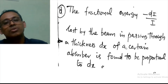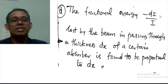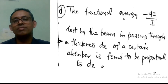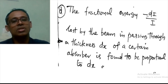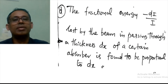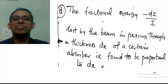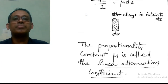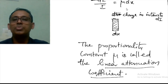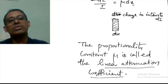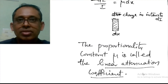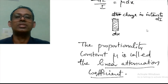The fractional energy loss −dI/I is found to be proportional to the thickness dx. The negative sign shows the intensity is decreasing, making the overall term positive. We can write −dI/I = μ dx, where μ is the proportionality constant called the linear attenuation coefficient.